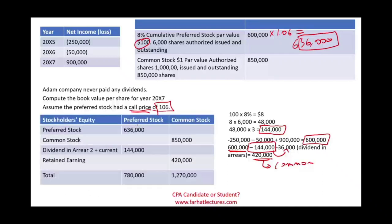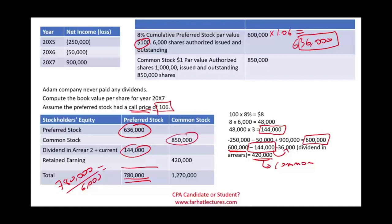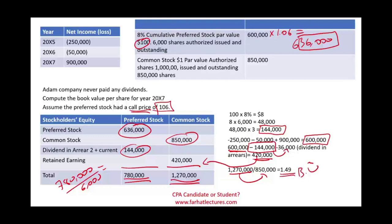So the preferred shareholders get $636,000 for stock plus $144,000 of dividends in arrears, totaling $780,000 for preferred. We can take $780,000 divided by 6,000 shares for the preferred book value per share. For common shareholders: $850,000 of common stock plus $420,000 of retained earnings equals $1,270,000. Dividing by 850,000 shares, the book value per share is $1.49. Retained earnings dropped from $456,000 to $420,000 because we pay a premium to buy back preferred shares, which reduces what's available to common.